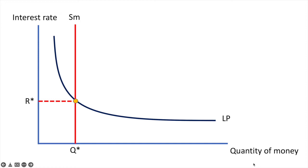If the rate of interest is higher than R star then the quantity demanded of money will be less than the quantity supplied of money and the interest rate will fall to reach R star. If the rate of interest is below R star then the quantity demanded of money will be greater than the quantity supplied of money and the interest rate will rise to reach R star. The equilibrium rate of interest will not change unless there is a change in the demand for money or liquidity preference or a shift in the money supply.